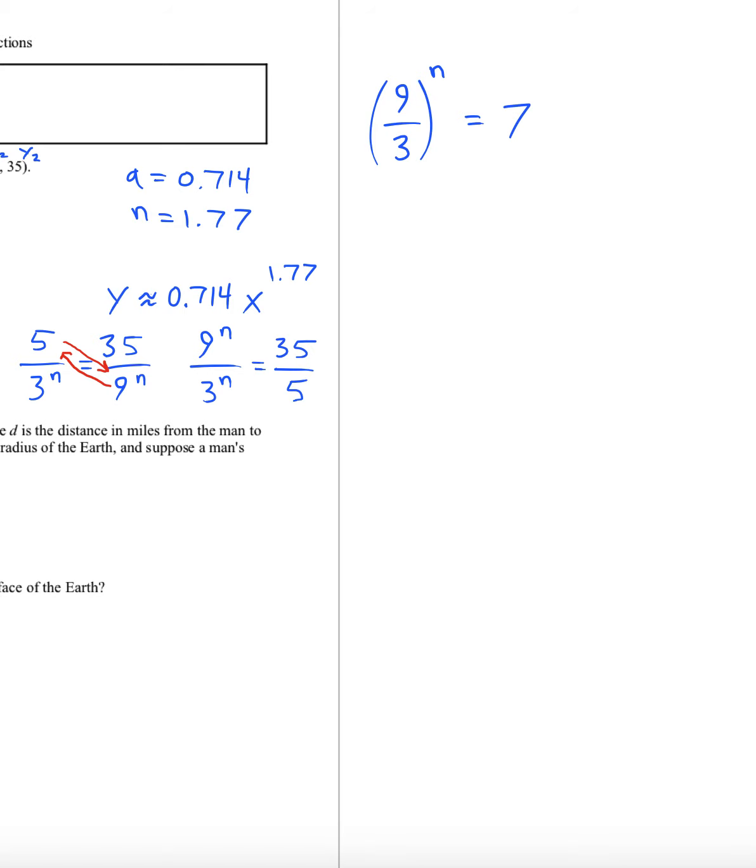Now we'd like to solve for n and we're going to use a log or a natural log to bring that n down. I'll just use natural log on both sides. Notice that nine over three is three, so that simplifies that a little. By properties of logs we're allowed to bring the n down in front. Divide both sides by ln three, and we have it: n equals ln seven over ln three.